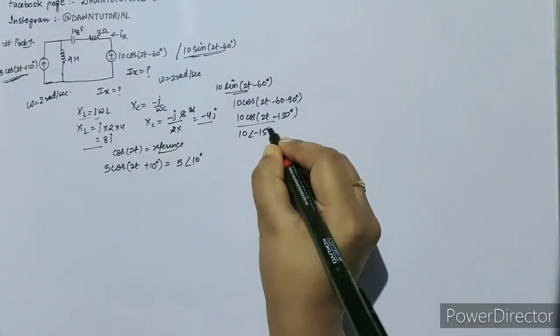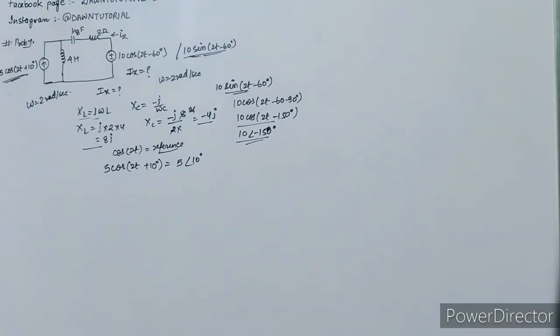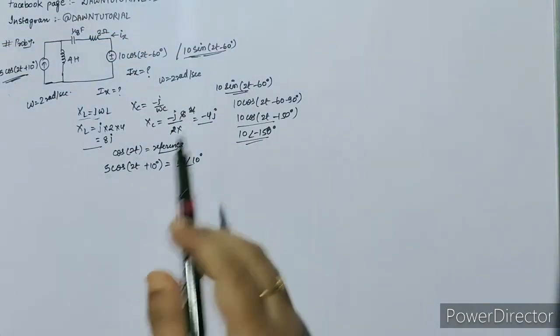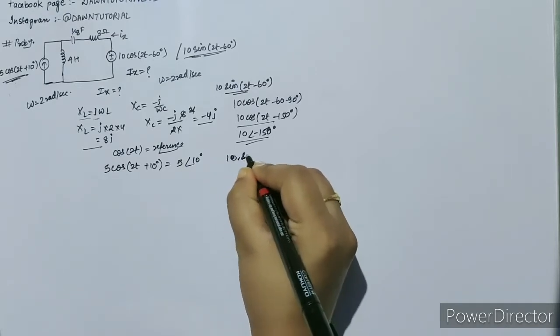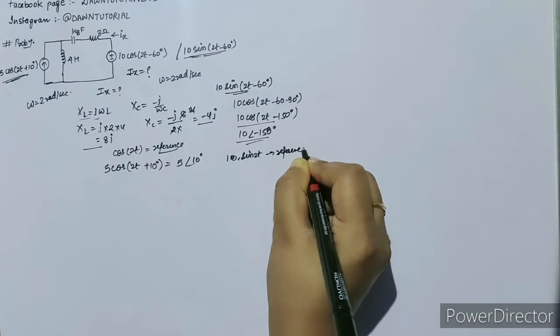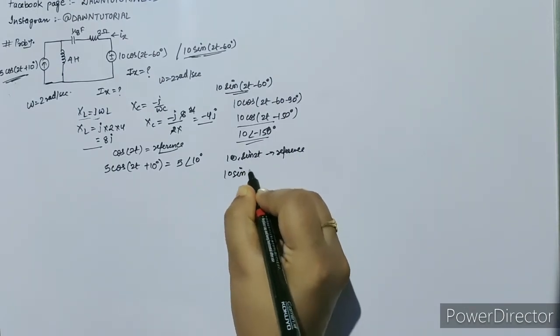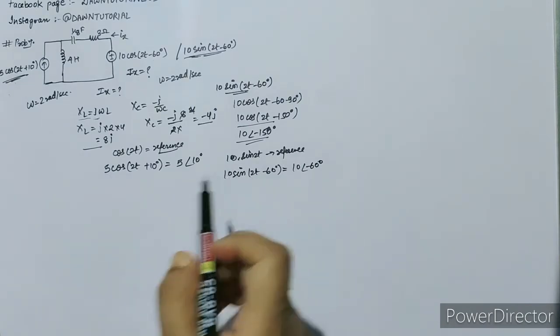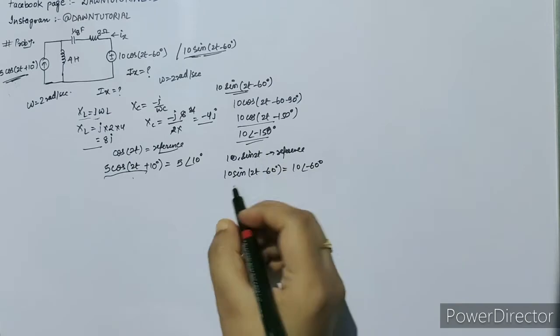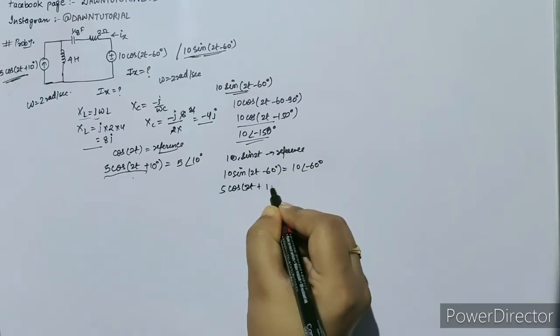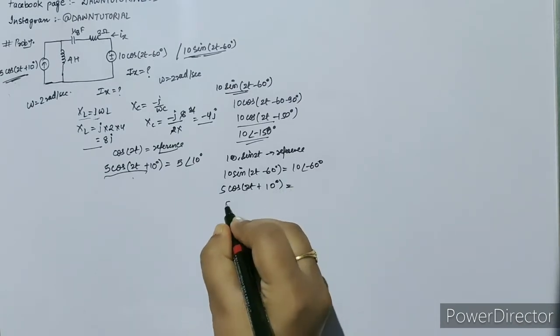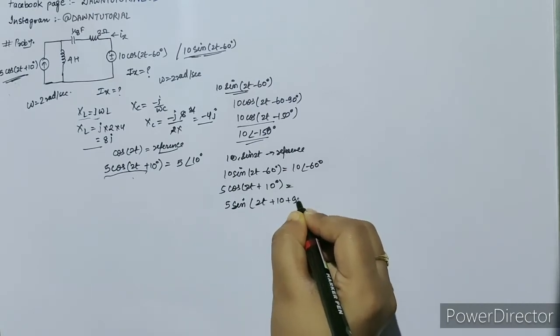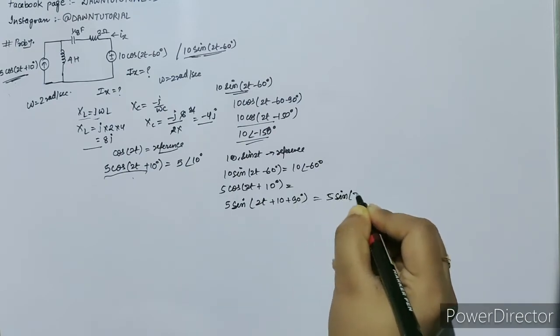But if someone says I need to take sin 2t as reference, then if we take this reference, we will write 10 sin(2t-60°) in phasor domain simply as 10∠-60°. And now we will change this term to sin term, so 5 cos(2t+10°) becomes 5 sin(2t+10°+90°), which is 5 sin(2t+100°).